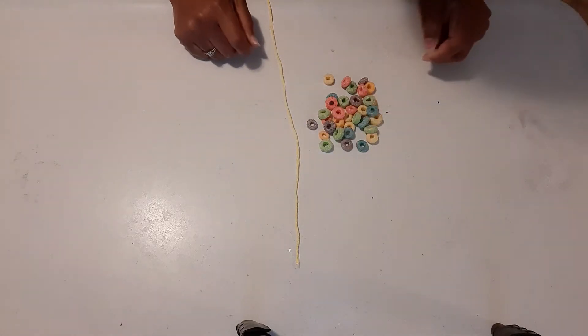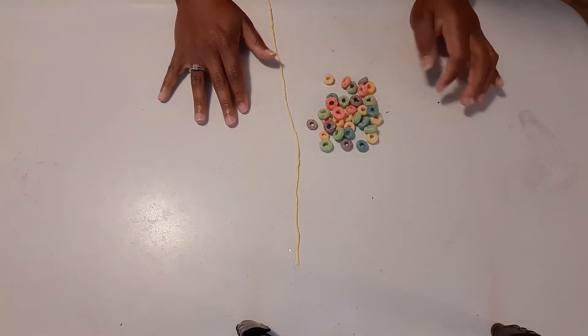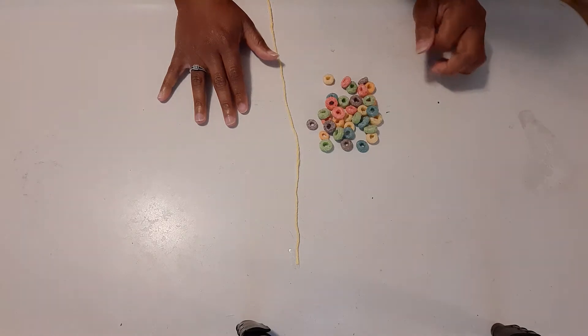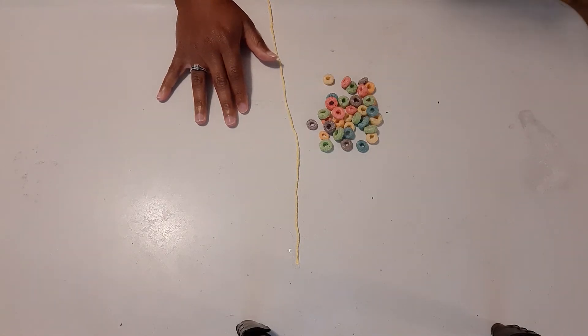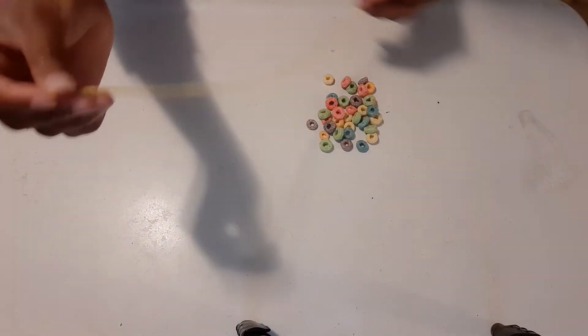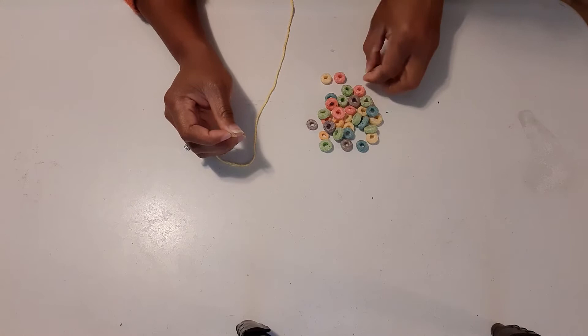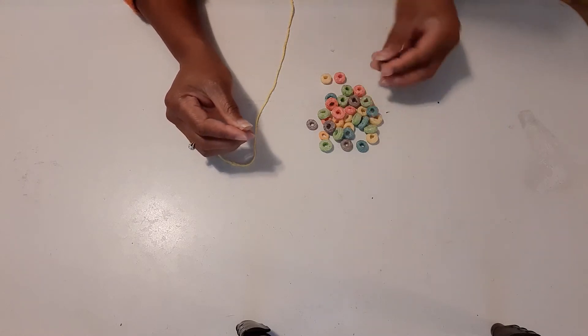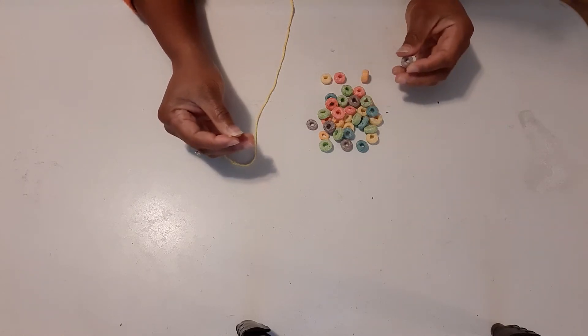Hey guys, Miss Mills here. Today we're gonna make a little bird feeder to hang in a tree. What you're gonna need is a piece of yarn and some Fruit Loops or some cereal.